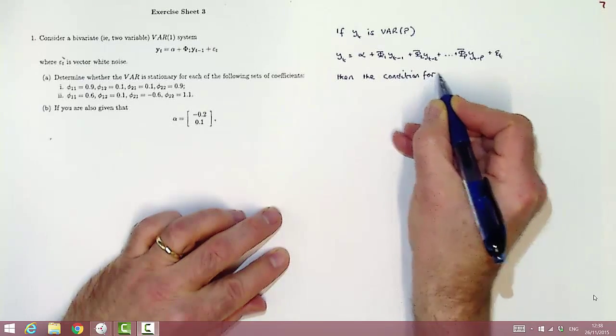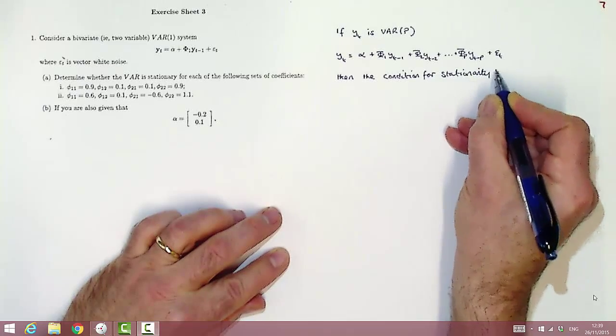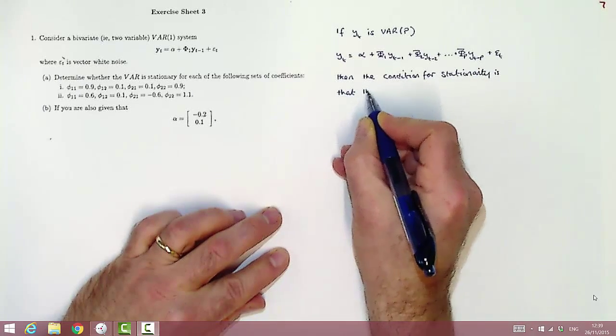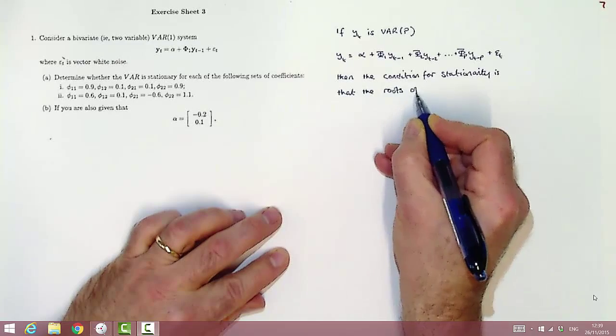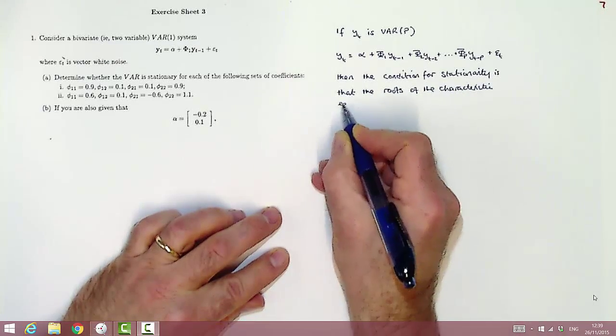And then remember the condition for stationarity involves what's called the characteristic equation that's associated with the VAR, which is a determinantal equation involving the vector auto-regressive polynomial terms.